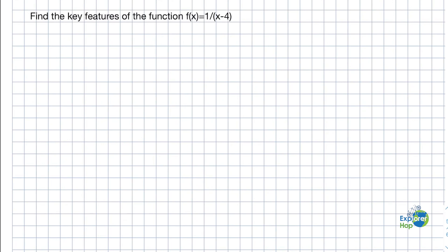Hello everyone, welcome to Explorer Hop. Today we will be finding the key features of the function f of x is equal to 1 over x minus 4.